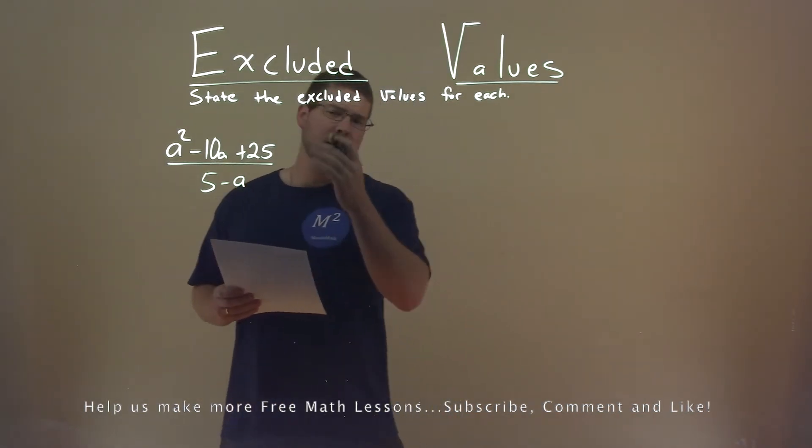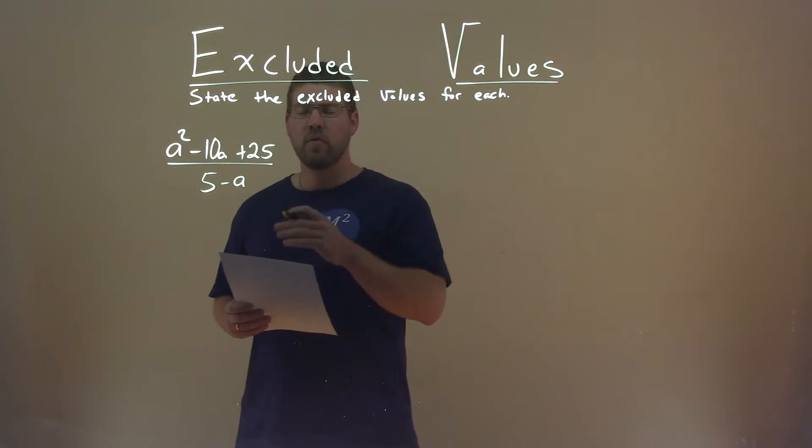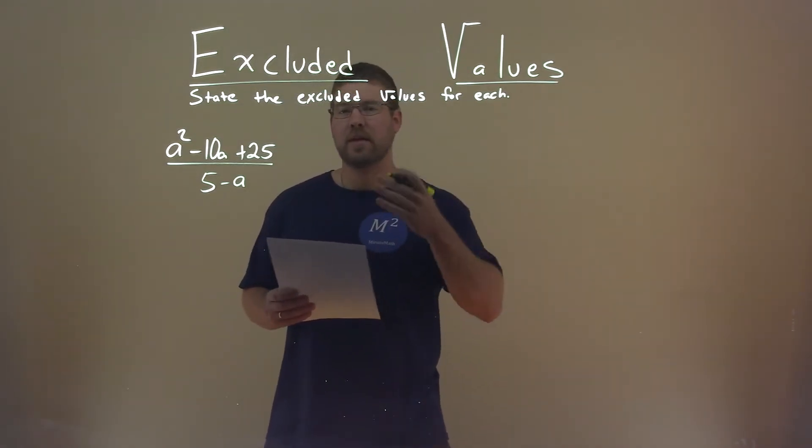Well, I know with rational functions we can't divide by 0. So, if we find the value of a that makes the denominator equal to 0, that's our excluded value.